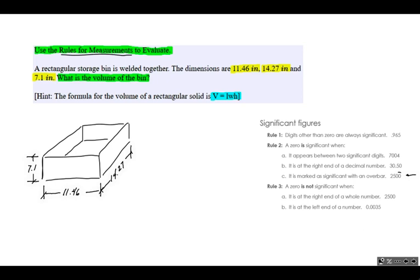So let's go ahead and write down what we need to do here. Our volume is going to equal our length times our width times our height. So our volume is going to equal, let's call our length 14.27, and our width 11.46, and our height 7.1. And before we do that multiplication, let's identify the number of significant figures in each of these numbers.